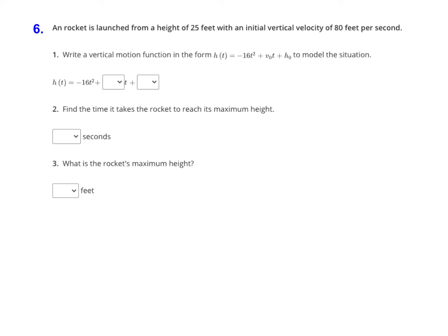Remember that v sub zero is the initial velocity, and it tells us right here that the initial vertical velocity is 80 feet per second. So we know the v sub zero has to be 80.